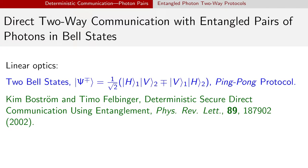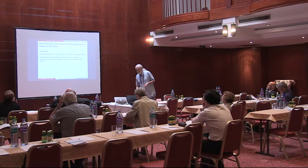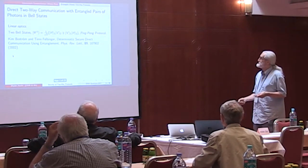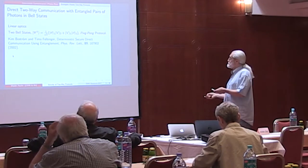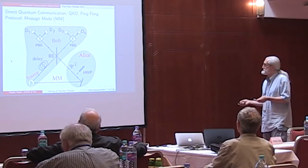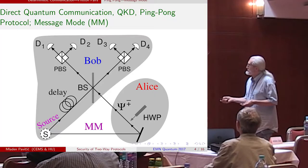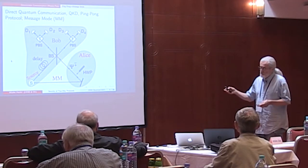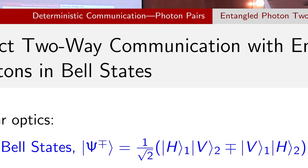Almost 15 years ago another protocol was proposed which, if secure, would enable us to directly transmit messages — not keys but messages — because as opposed to the previous protocol which is probabilistic, this one is deterministic. We have two Bell states, and could also use four Bell states, but that would require non-linear optics so it's not practical. By introducing a half-wave plate, Alice can switch from one Bell state to another.